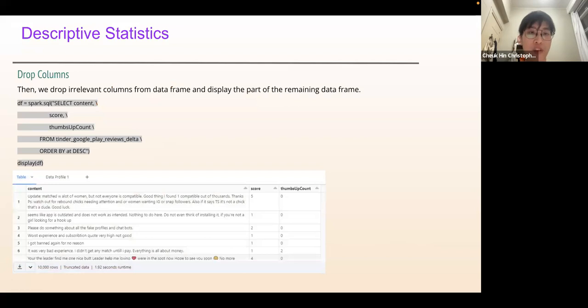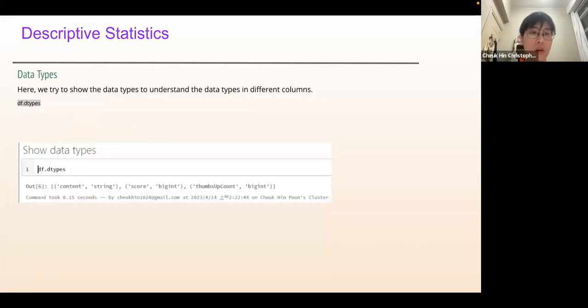We drop the elastic columns from the data frame. We show data types to understand the data types in different columns such that the content has a string type, the score has an integer type, and the thumbs up count has an integer type.